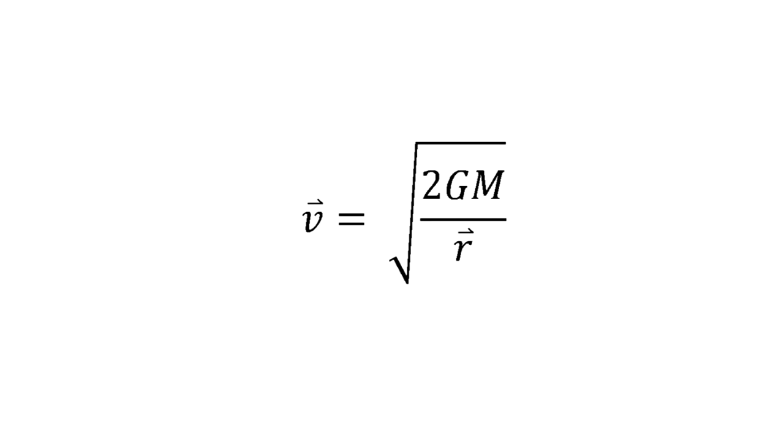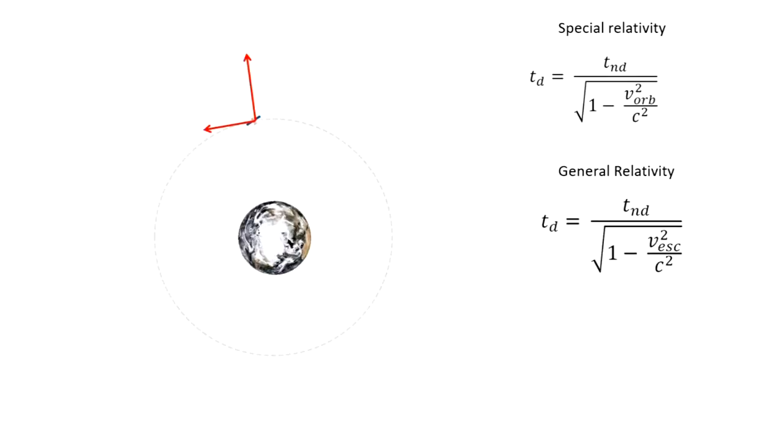We can now plot the vector for gravitational time dilations. Notice that this vector can also be interpreted as if the satellite were moving in a direction away from Earth, just like the orbiting motion. There is no change in the distance from the satellite to Earth. It is more of a pretend motion.